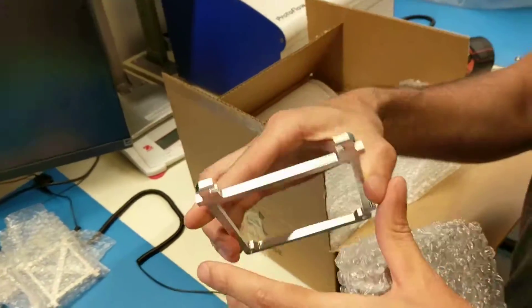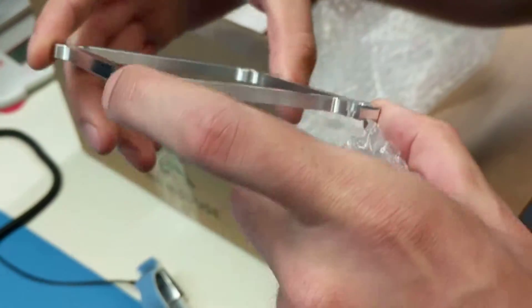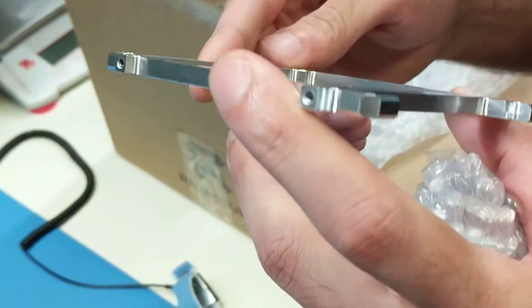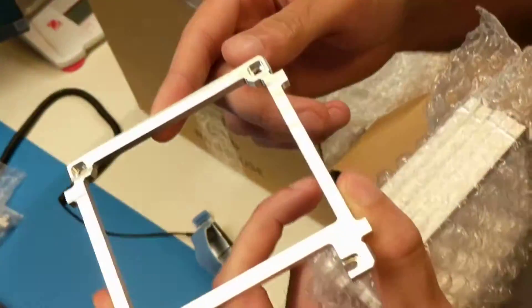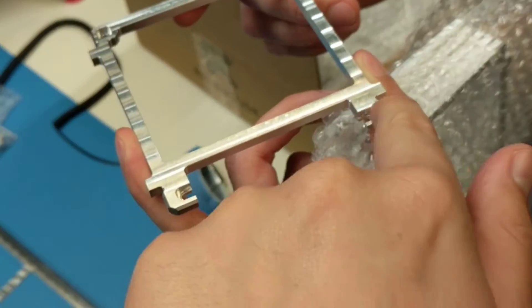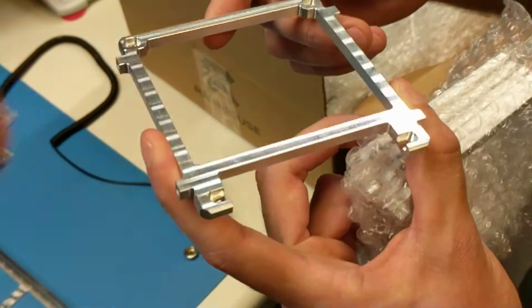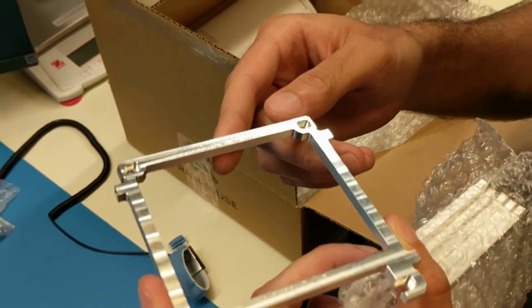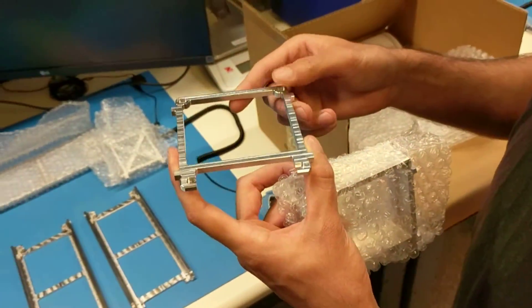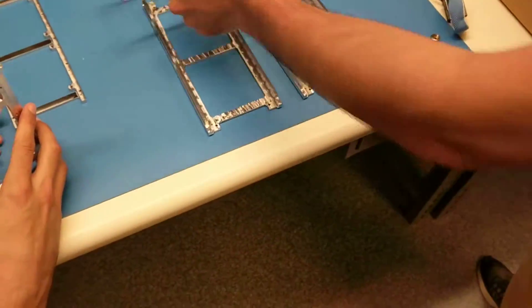Those are brackets, some PCB brackets. There we go. Oh yeah, very nice. That cutout right there is for the PC-104 connector if we so choose. Other options are still being considered, but yeah, those are on there.